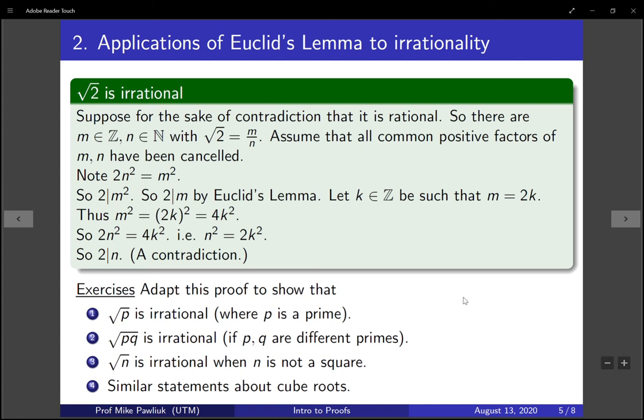As an example, to show that you understand what's going on here, adapt this proof to show the following facts. That the square root of primes are irrational, the square root of products of primes are irrational, the square root of n is irrational when n is not a square, and similar statements about cube roots.